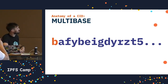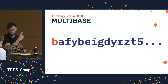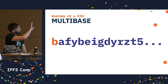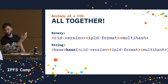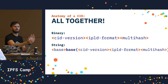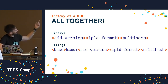Version 0 CIDs like the QM ones are also base 58 encoded, but they're not prefixed with Z. All together for a CID: in binary form it's a CID version, the IPLD format multicodec, and the multihash — which is split into the hashing function used, the hash length, and the hash. As a string, we have the multibase encoding applied to the rest of the CID.